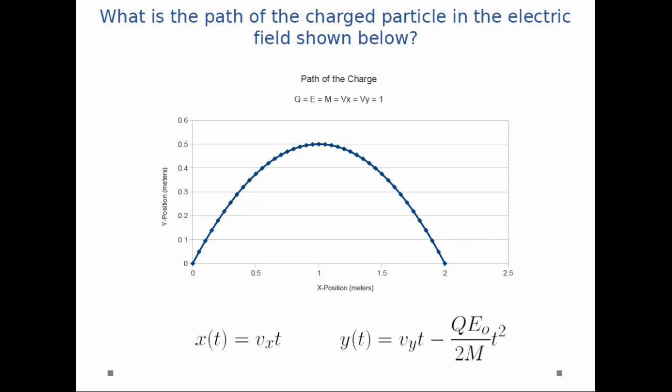So I can put those two together. And in this case I've just plotted a sample path of what this charged particle would follow. In this case I just assume that q, e, m, vx, and vy were all equal to 1. Just so we get an idea of the shape of the graph.